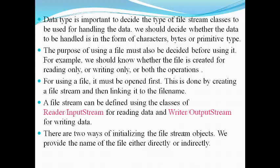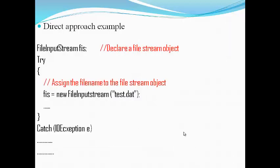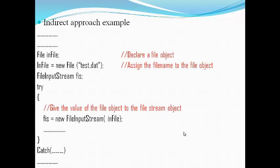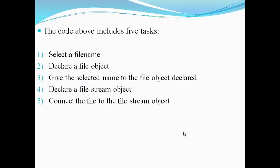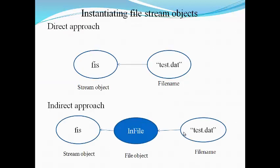A file stream can be defined using reader or input stream classes for reading data, and writer or output stream classes for writing data. There are two ways to initialize file stream objects: direct and indirect. In the direct approach, a FileInputStream object FIS is created and assigned the file name, for example 'test.data', directly. In the indirect approach, a File object called 'infile' is first declared and assigned the file name 'test.data', and then the file object is passed to the FileInputStream object FIS. The indirect approach involves five tasks: select a file name, declare a file object, assign the file name to the file object, declare a file stream object, and connect the file to the file stream object.